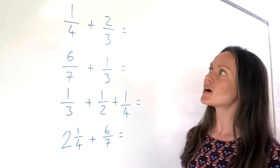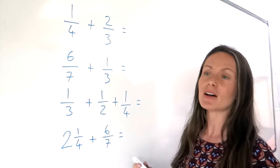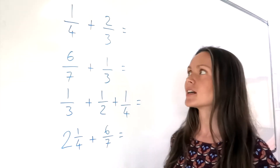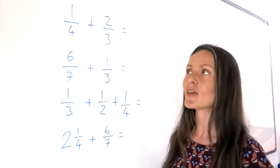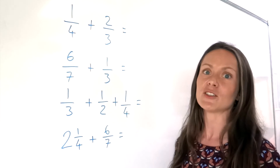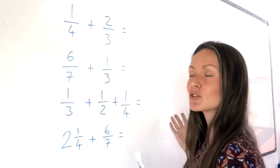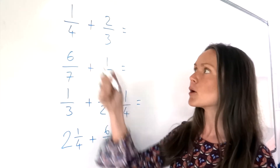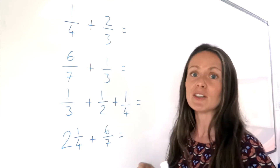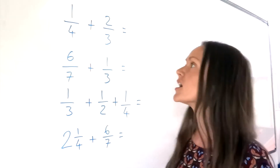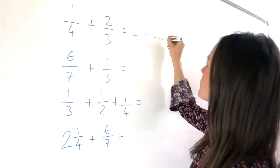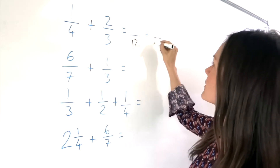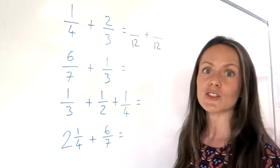So in the first question, to find the common denominator, we have to find a number that both 4 and 3 fit into exactly. It's better if you can find what's called the lowest common multiple — the smallest number that both 4 and 3 fit into — because it means you'll do less simplifying later on. But it doesn't matter if you don't get the lowest common multiple, as long as it's a number that both 4 and 3 fit into exactly. It just means you might have to do some extra simplifying afterwards. So the lowest common multiple of 4 and 3 is 12 — the smallest number that both 4 and 3 fit into exactly.